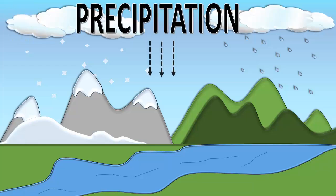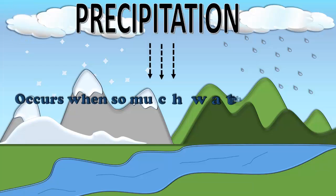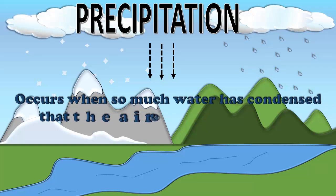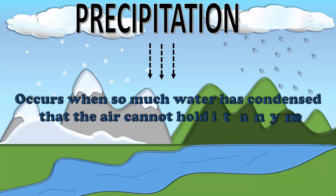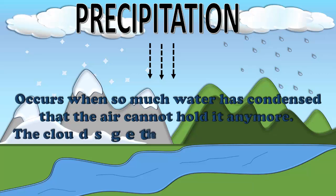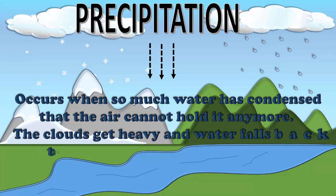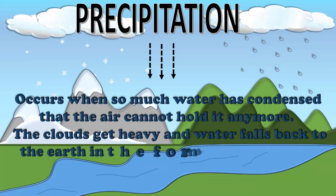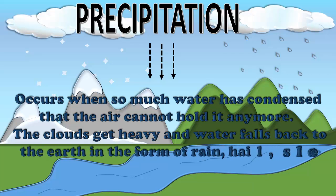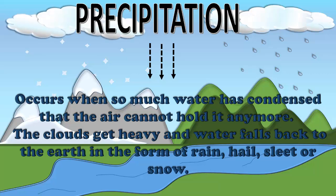Precipitation occurs when so much water has condensed that the air cannot hold it anymore. The clouds get heavy and water falls back to the earth in the form of rain, hail, sleet, or snow.